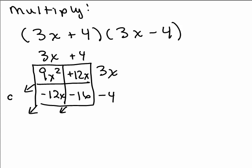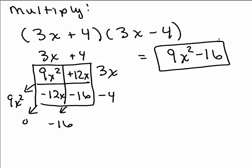And then remember, we add along the diagonals: 9x², and what happens here? Again, 12x - 12x is 0, and -16, so this answer is 9x² - 16. Again, we got a difference of two squares.